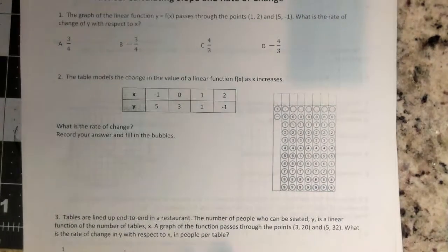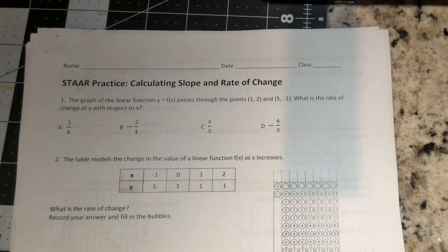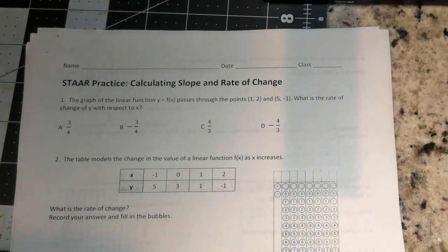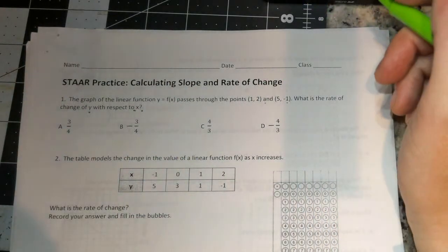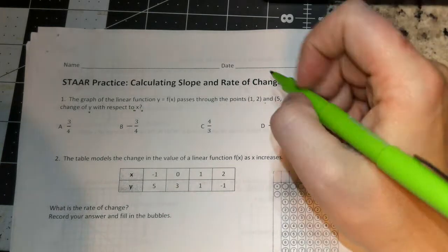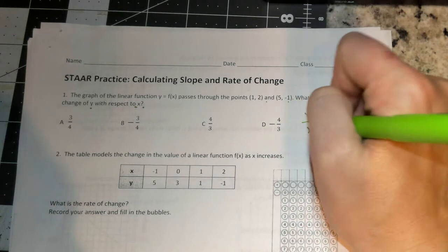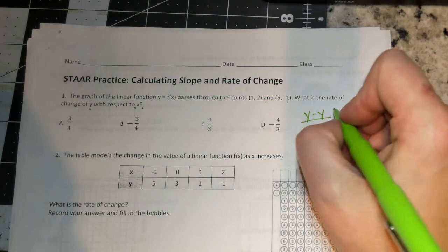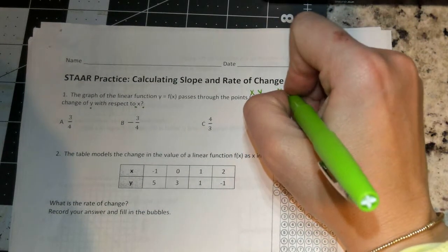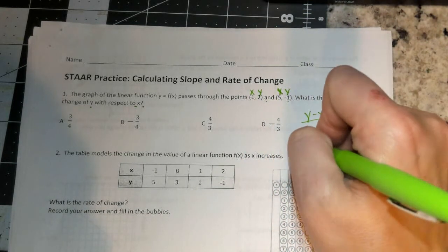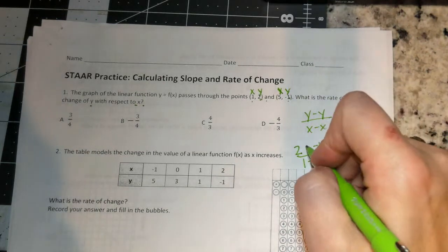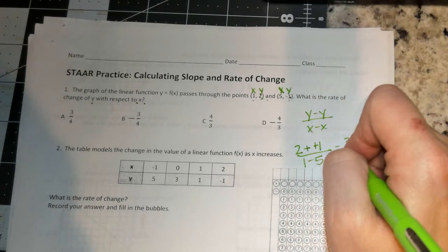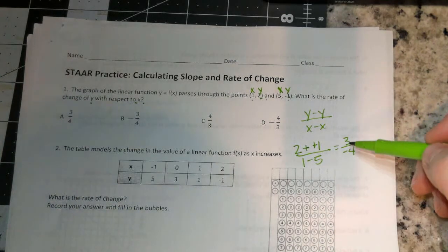All right. So let's move on. Put that in your folders, please. We're going to move on to this calculating slope and rate of change. Number one says the graph of the linear function Y equals F of X passes through the points one, two, and five, negative one. What is the rate of change of Y with respect to X? So rate of change of Y. So the change in Y. Y minus Y over X minus X is what we're figuring out here. The change in Y over the change in X. So we have X and Y. We want X and Y. So Y minus Y would be two minus negative one. Y minus Y divided by X minus X, one minus five. So two minus negative one is a two plus one, which is three. And then one minus five is a negative four. So negative three fourths. B.